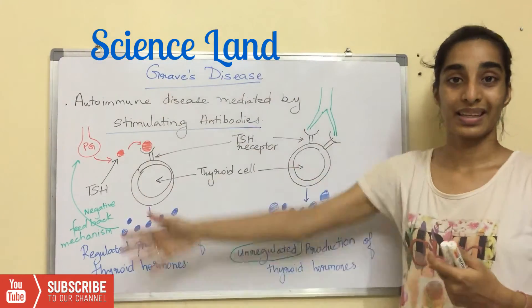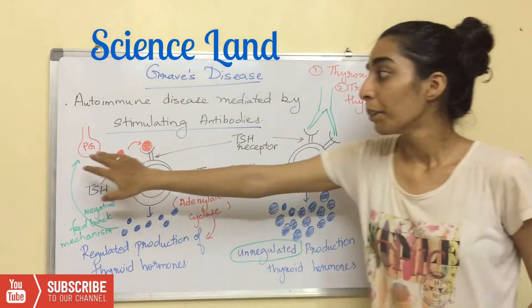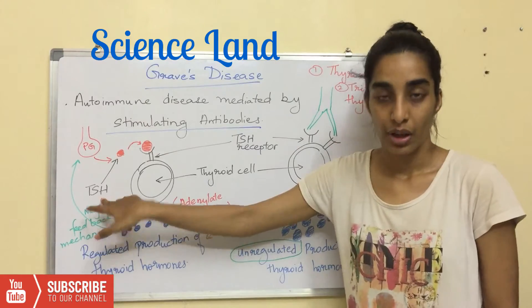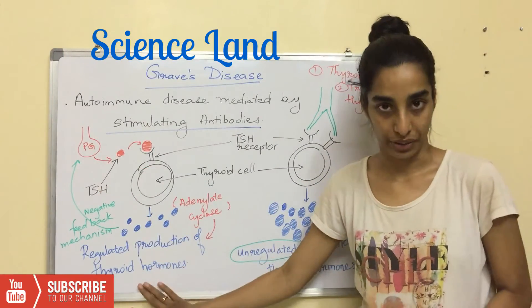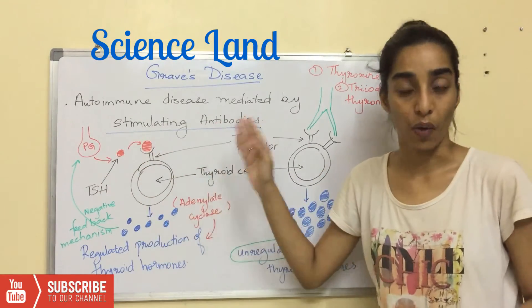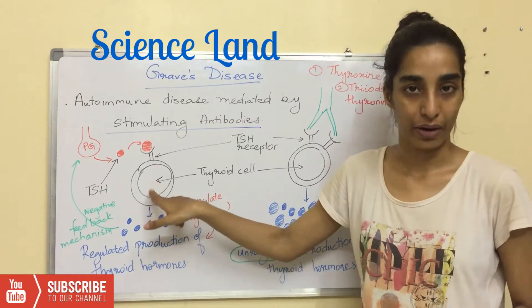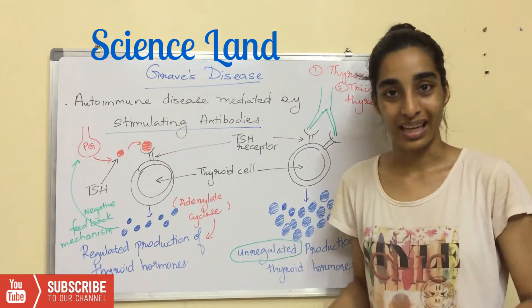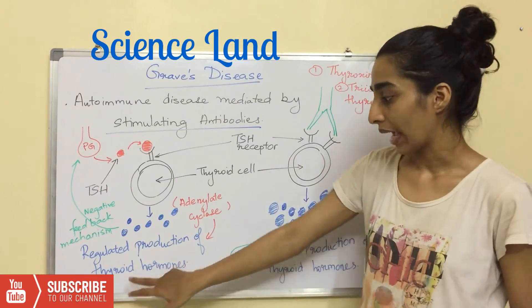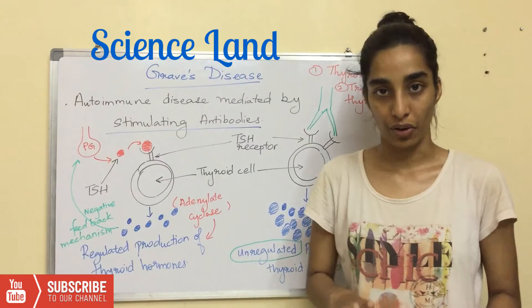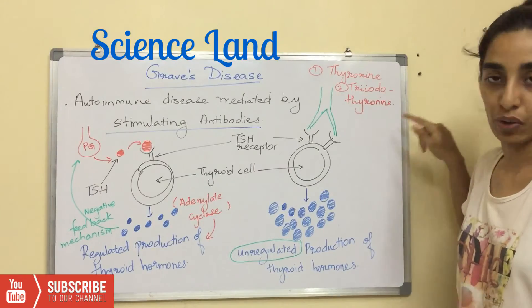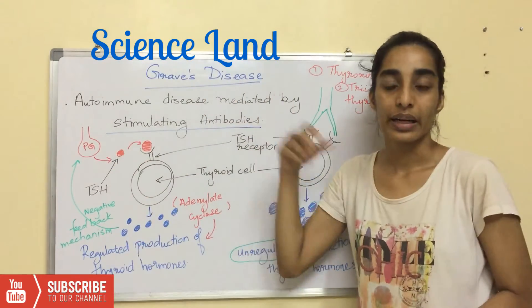This is the diagrammatic representation of Graves disease. The pituitary gland releases thyroid stimulating hormone which stimulates the production of thyroid hormones. This TSH will bind to thyroid stimulating hormone receptor which is present on thyroid cells. This results in activating adenylate cyclase which will further produce thyroid hormones. There are two thyroid hormones: the first one is thyroxine and the second one is triiodothyronine. Now this was in a normal person.